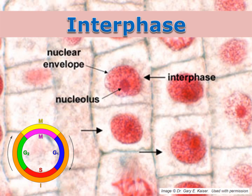Interphase is the largest portion of the cell cycle. Cells spend almost 90% of their life in interphase. Interphase can be identified by the fact that the nuclear membrane, which is also called the nuclear envelope, is still completely intact.